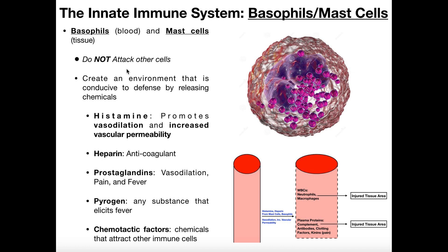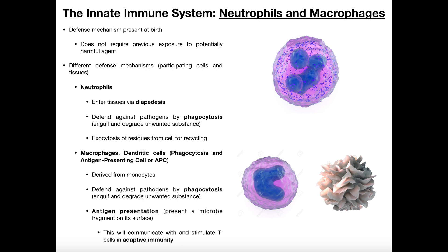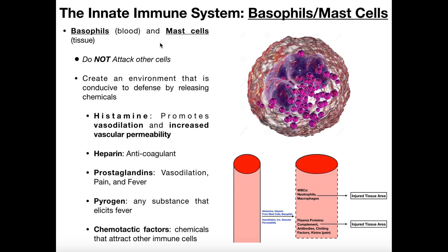Basophils and mast cells do not attack other cells directly. Unlike neutrophils and macrophages that actually perform phagocytosis, these cells do not attack. They sit on the sidelines and release chemicals that can damage foreign material and foreign pathogens, creating an environment conducive to defense. There are five major kinds of chemicals they release: histamine, heparin, prostaglandins, pyrogens, and chemotactic factors.